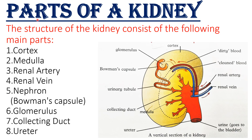Now let's discuss the parts of the kidney. The structure of the kidney consists of the following main parts: the cortex, medulla, renal artery, renal vein, the Bowman's capsule (also called the nephron), the glomerulus, the collecting duct, and the ureter. We will study each part separately in our lesson.